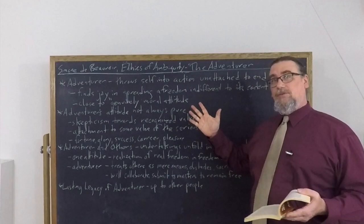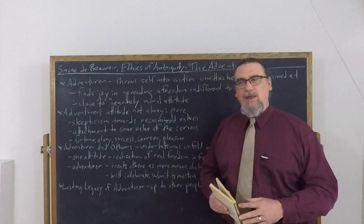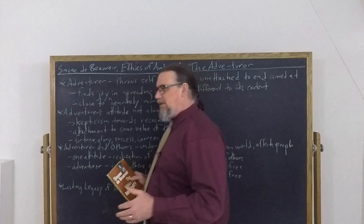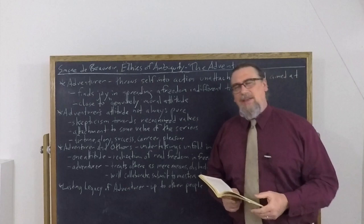And then she drops the hammer. She says, here we go, if existentialism were solipsistic. Now, solipsistic means thinking that you're the only person who matters in the world. You are the center of existence. If existentialism really was that way, then the adventurer would be the embodiment of existentialism. She's saying that's not the case.